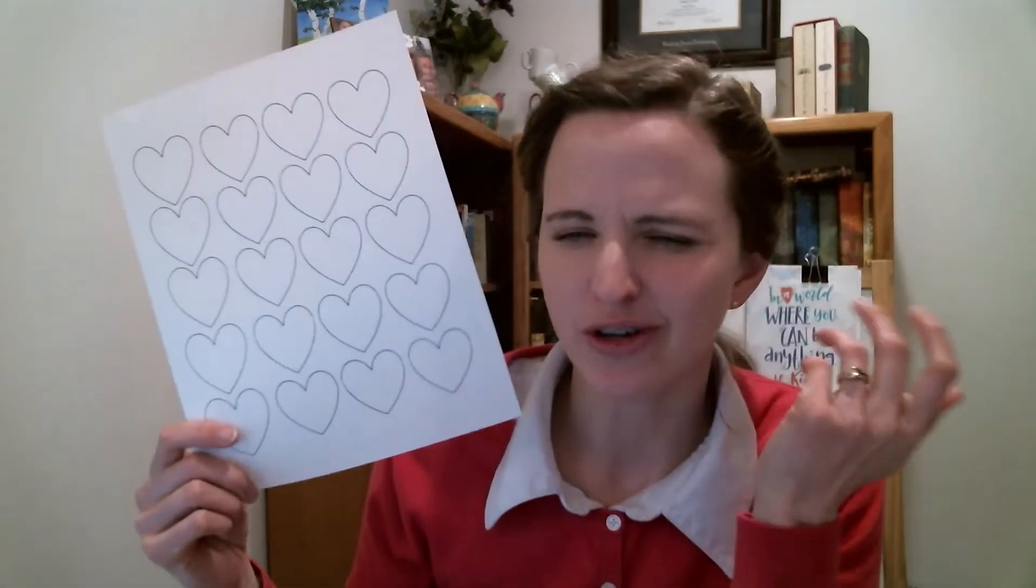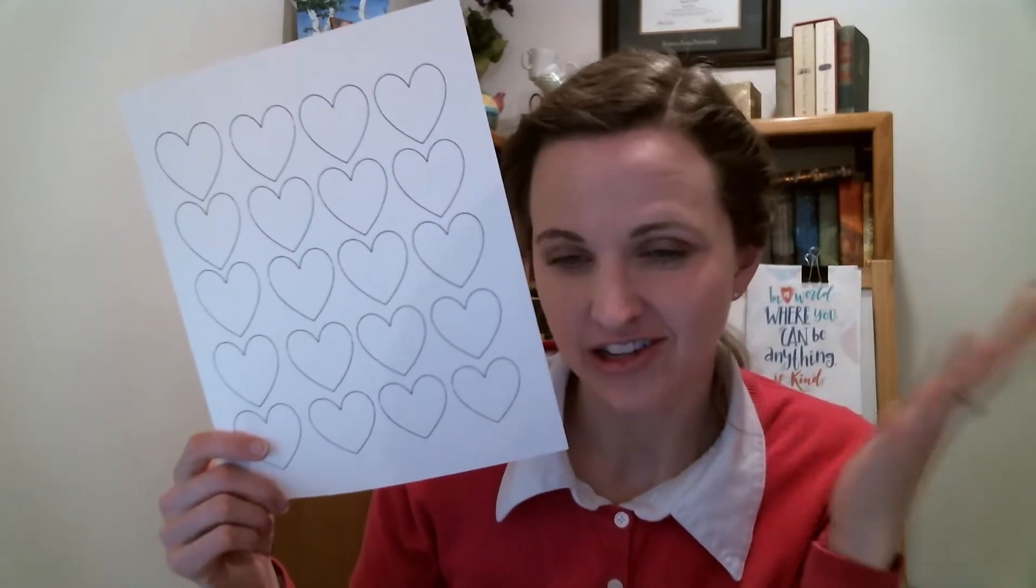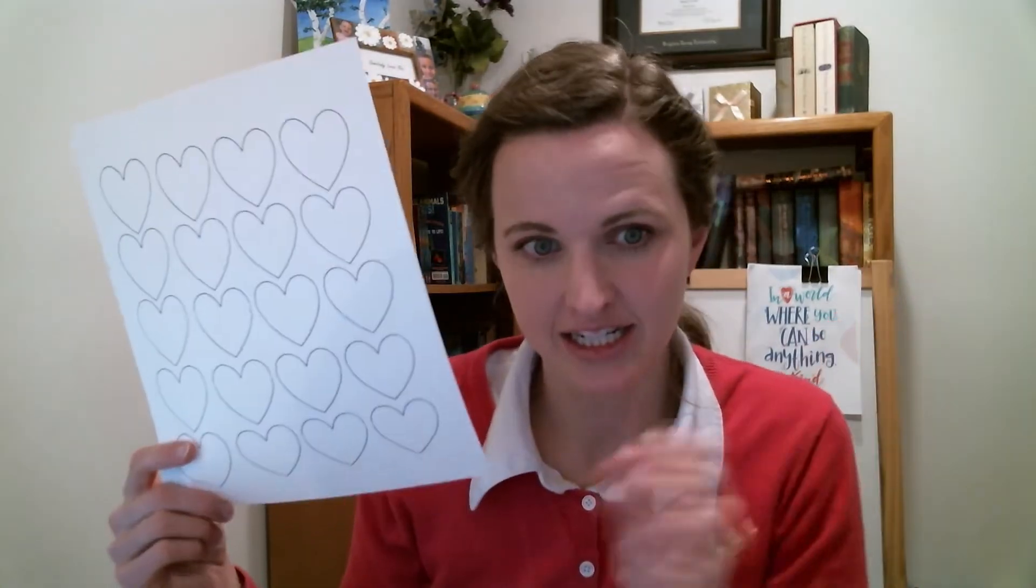So what you are going to need is a page with lots of heart shapes. You could also just cut out your own heart shapes if you want. And there's a lot of ways you can do this project, but you'll need that. And then you're going to need two pieces of paper cut into this shape. I don't know what to call this shape. It almost looks like a speech bubble. But really what it is, it's the hedgehog. So here's the little nose and then his big body.